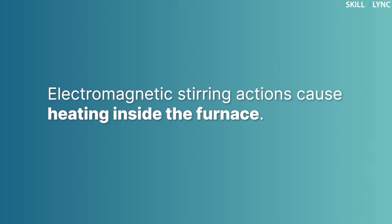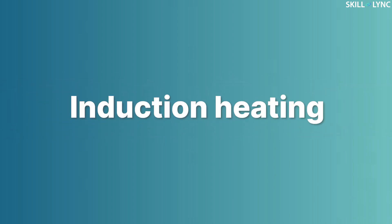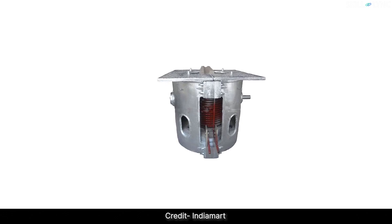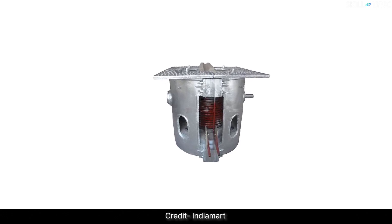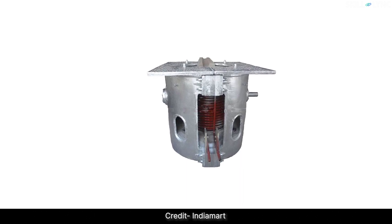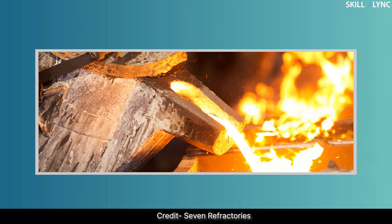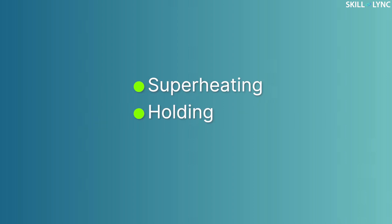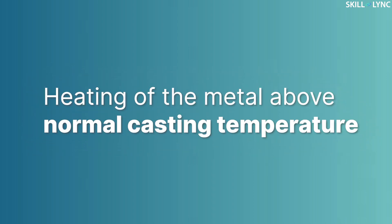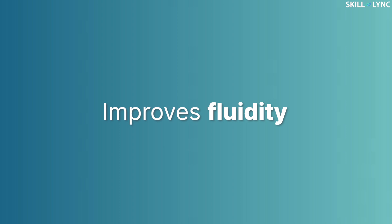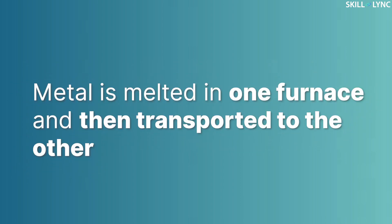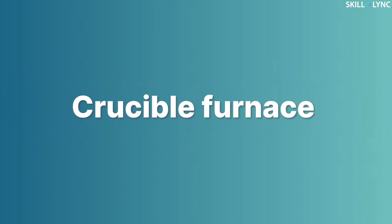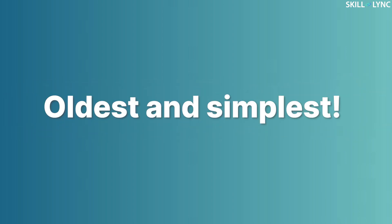This high-frequency current causes strong electromagnetic stirring, which generates induction heating inside the furnace. The core induction furnace, on the other hand, employs a low-frequency current, and the coil surrounds only a small part of the furnace. Induction furnaces find application in non-ferrous foundries and are suitable for superheating, holding, and duplexing. Superheating is the heating of metal above normal casting temperatures to improve fluidity, while duplexing involves using two furnaces — melting in one and transferring to the other.